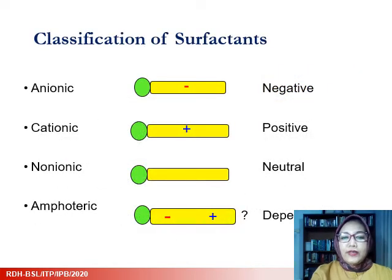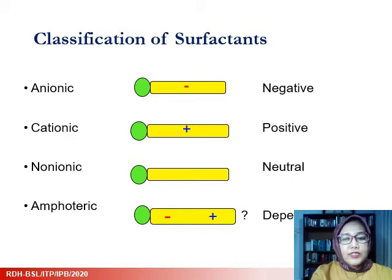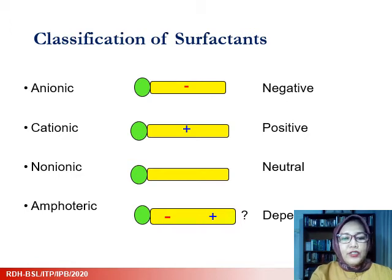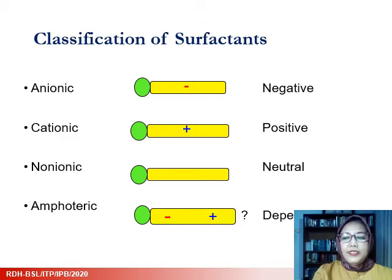Detergents or surfactants can be further classified into anionic — the negatively charged detergent — cationic — the positively charged detergent — non-ionic detergent which does not have any charge, and amphoteric detergent which has a different charge depending on the pH.